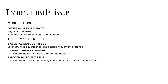We begin today with muscle, a highly vascularized body tissue responsible for most types of body movement. Whether we're thinking about locomotion or movement of substances throughout the body — through the digestive tract, respiratory tract, and heart — we have three types of muscle: skeletal muscle, cardiac muscle, and smooth muscle.